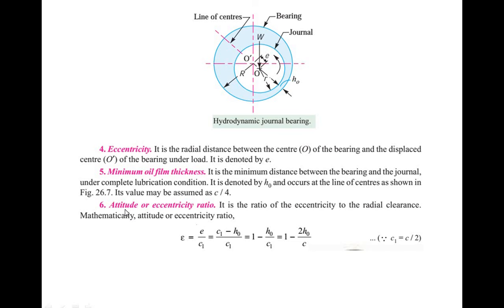The next term is attitude or eccentricity ratio. It is the ratio of the eccentricity to the radial clearance. Mathematically, epsilon equals e upon c1, where e equals c1 minus h0. This gives epsilon equal to 1 minus 2h0 by c, since c1 is equal to c by 2.